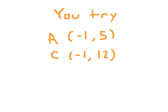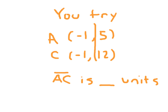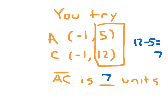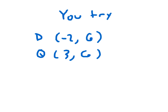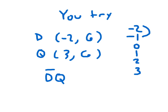Here, you try. This is points A and C, so how many units long is line segment AC? In this case, you're going to compare the y-coordinates 12 and 5, because the x-coordinates — negative 1 — are the same. Write out the whole problem and solve it. Did you get 12 minus 5, which equals 7? Line segment AC is 7 units long.